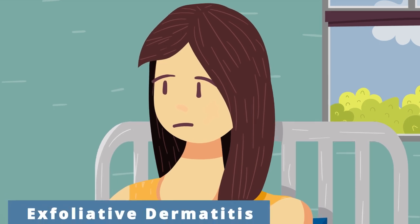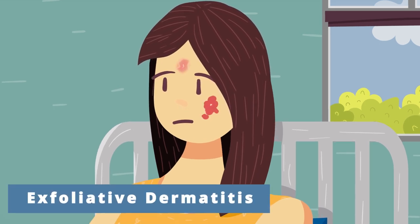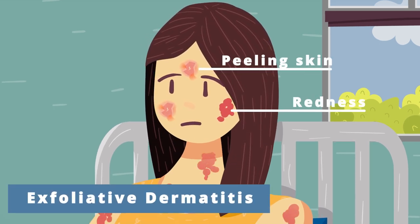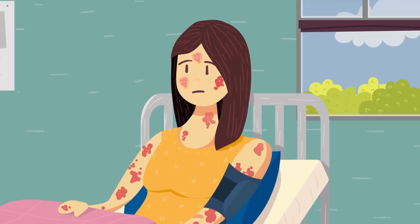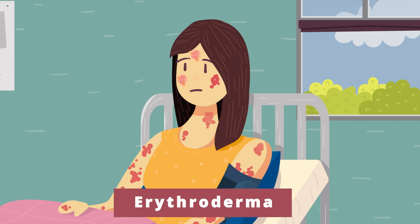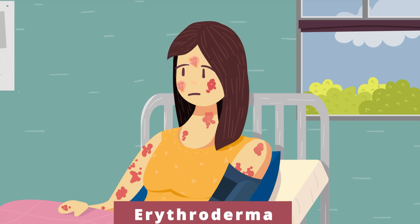Exfoliative dermatitis is a fancy term for a rash characterized by redness and peeling skin. When the rash occupies more than 90% of the body surface, the condition is called erythroderma, which is a dermatological emergency.